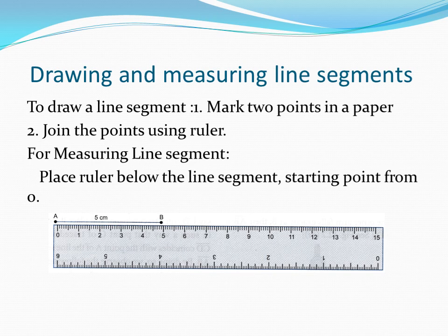The end point, where it falls on the scale, gives the length of the line segment. So, to draw a line segment: mark two points, join them, give them names, then place a ruler just below to measure the length. A line segment has two end points and a fixed length.